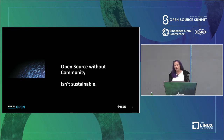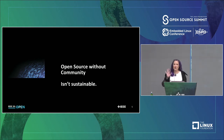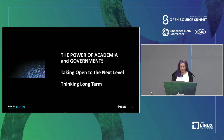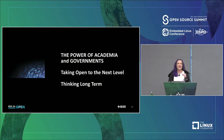Open source without community just isn't sustainable. There's been a lot of talk about commercial open source, open core, and so on. If you don't have that key community and the community doesn't have control, there's no sustainability. One reason I wanted to focus on academia and governments is because I believe they have the strength to help take open source to the next level.